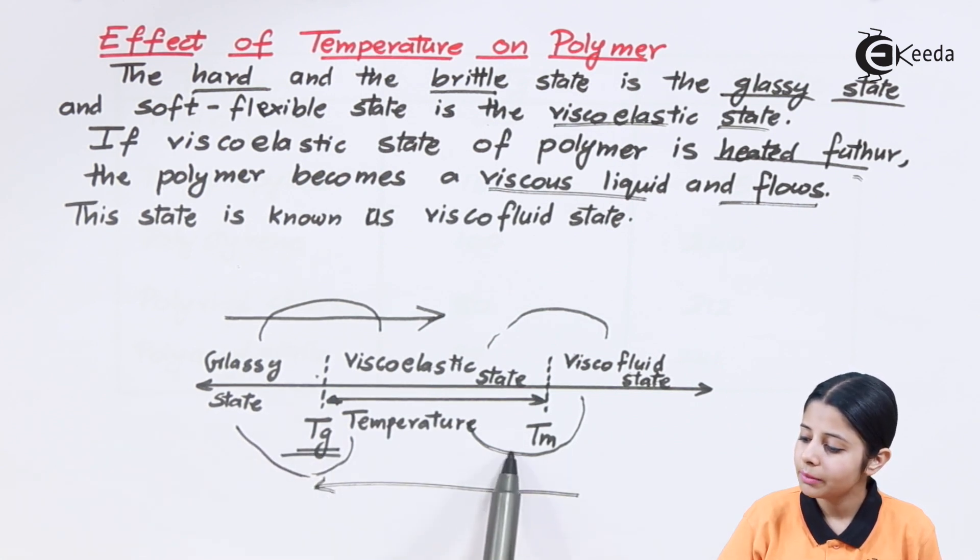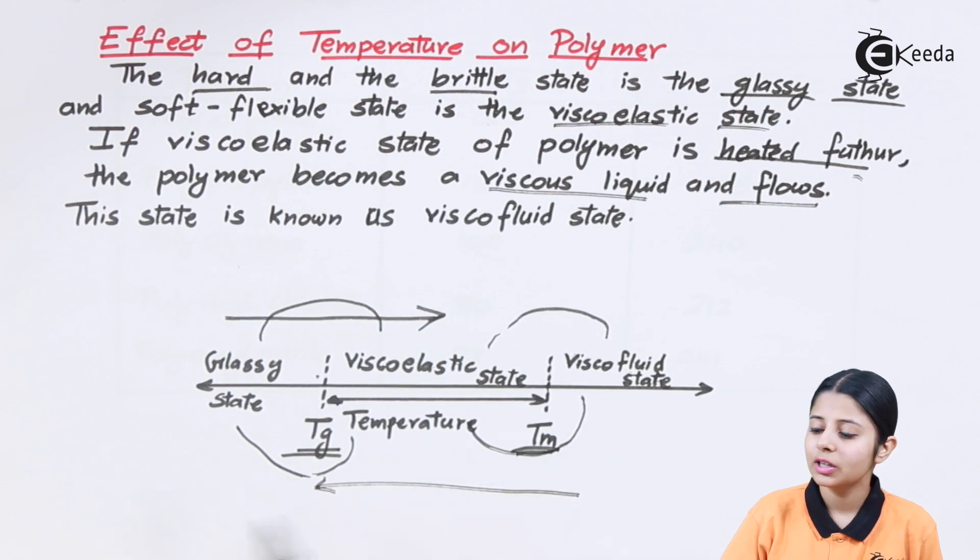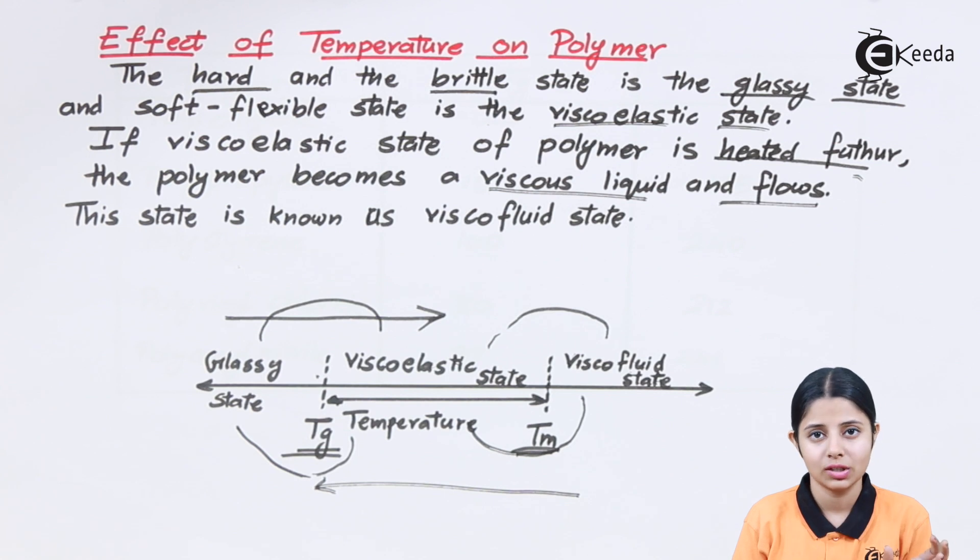This is my Tg and my Tm. Both these temperatures are very important. Tg is the temperature where the glassy state gets converted into viscoelastic state. We had melting points and boiling points in our normal solid-liquid-gaseous states.